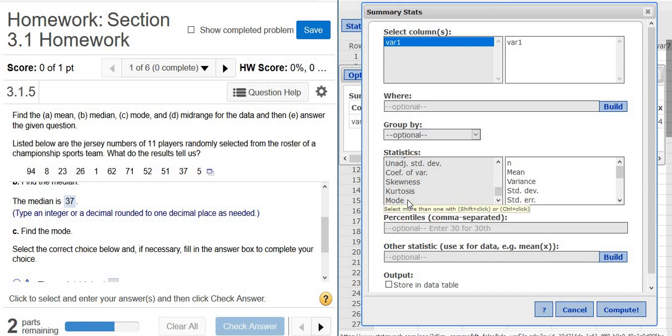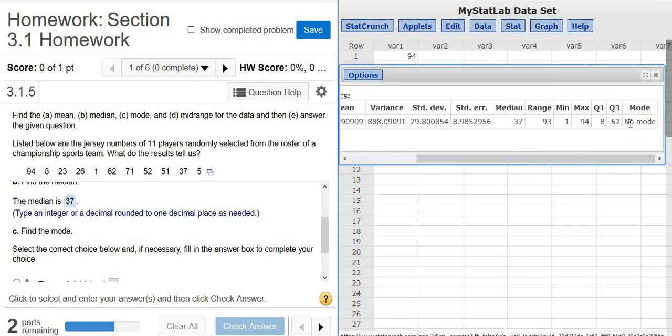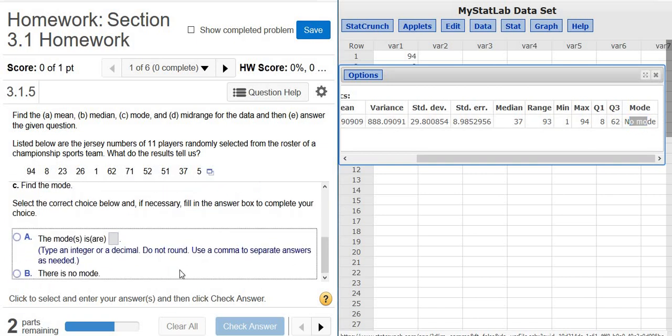If I left click, everything else is going to go away. I'm going to hold Ctrl on the keyboard, and then left click. Then see, everything is still selected. I'm going to click Compute. It should give us the mode. In this case, there is no mode. The answer is no mode. There is no number that appears the most.